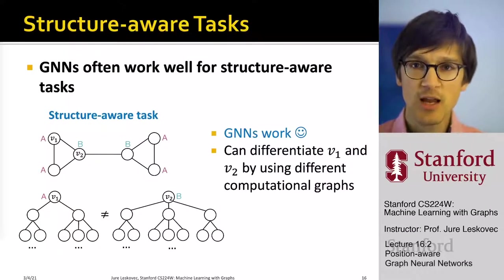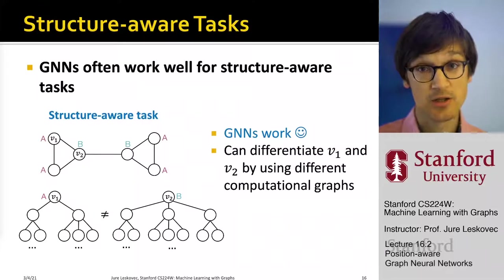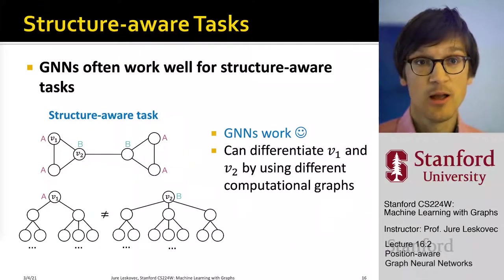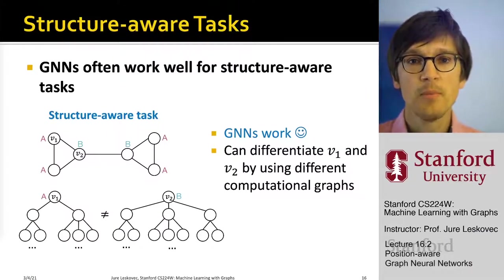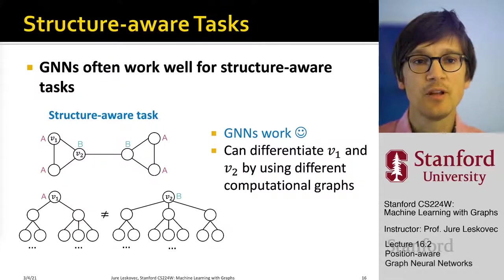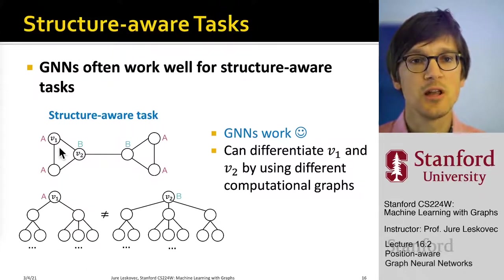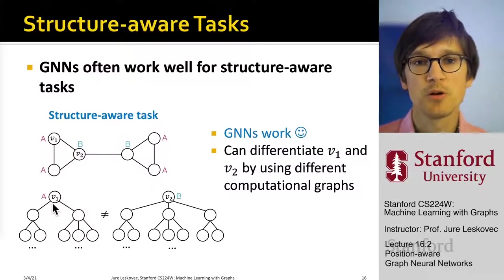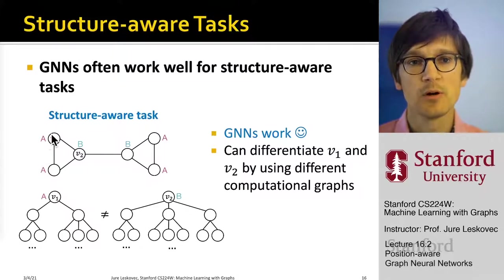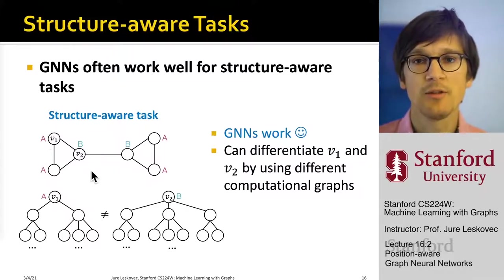The point is that GNNs — the graph neural networks, GCN, GraphSAGE, graph attention network — work well for structure-aware tasks. We can differentiate V1 and V2 because they will have different computational graphs: V1 has two neighbors and V2 has three neighbors at the first hop. So we are able to assign them different labels because they have different embeddings.